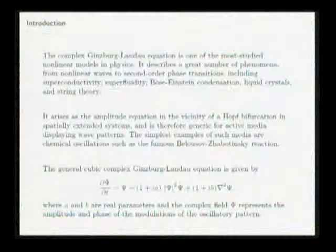It also arises as the amplitude equation for spatial systems in the vicinity of a Hopf bifurcation, and so it's the generic equation for studying pattern formation, wave patterns in active media. The most famous example is the BZ reaction, but there are lots of other examples as well. So it's a generic amplitude equation, and in that case psi would represent the amplitude and phase of the wave trains that you see. It's a very interesting equation to look at, and I've got two parameters in it, A and B.